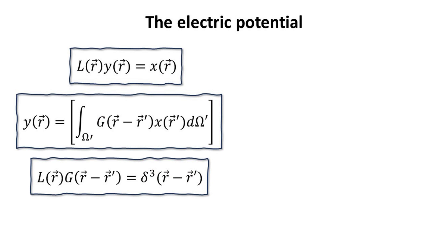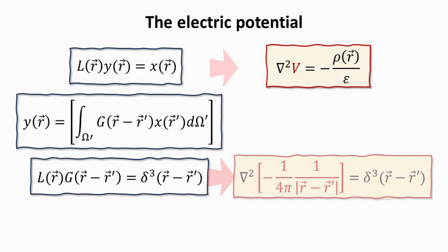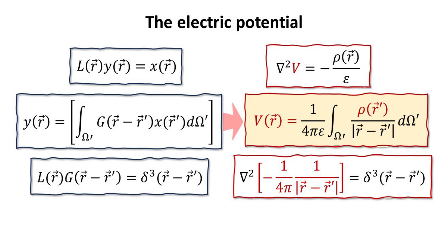The Green's function technique provides a very elegant approach for writing down the solutions to the differential operator. We repeat here the key equations from the last chapter. The differential equation that we are interested in is the Poisson equation and we know the Green's function for our Laplacian operator. Thus, this allows us to write down the expression for the response function V in terms of the source function, which is the charge density. This is the well-known result for the electric potential in electrostatics.